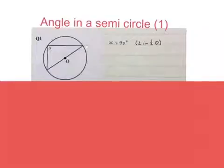In this sum you can see here's a diameter and the angle on the circumference on the diameter, so that is an angle in a semicircle. We can just write x is equal to 90 degrees, our reason angle in half a circle. Some people say angle in a semicircle or angle on diameter. I'm going to stick to this one, you choose your own.